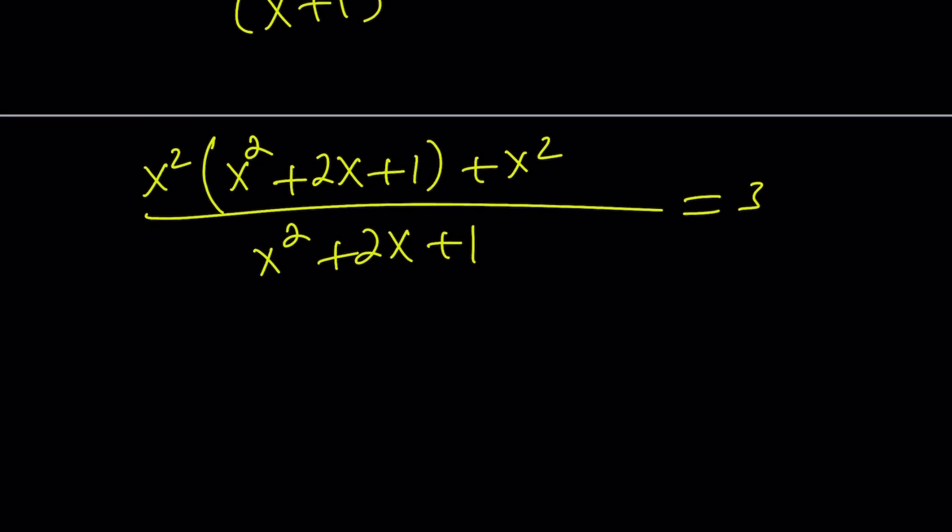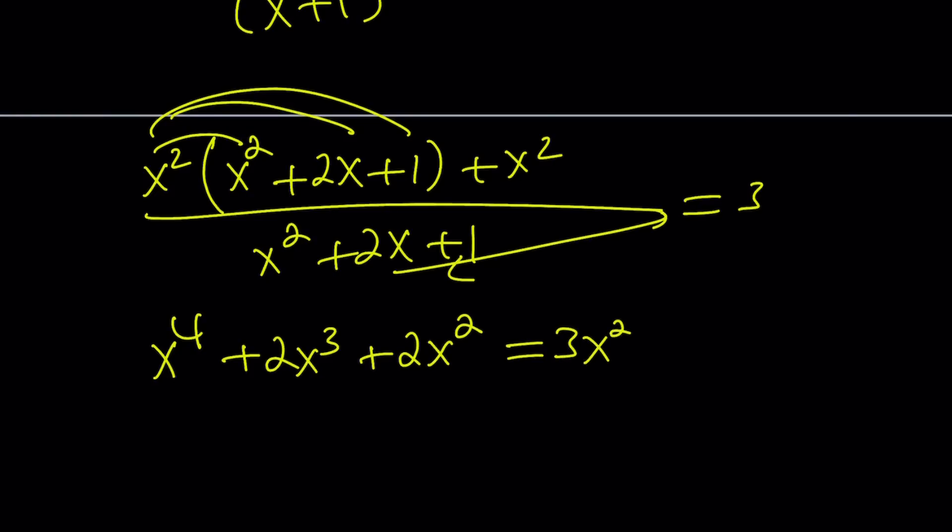Now let's simplify the numerator. x to the 4th power plus 2x cubed plus x squared and then another x squared, so that's going to give us 2x squared. And then if you cross multiply these two you're going to get 3x squared plus 6x plus 3.